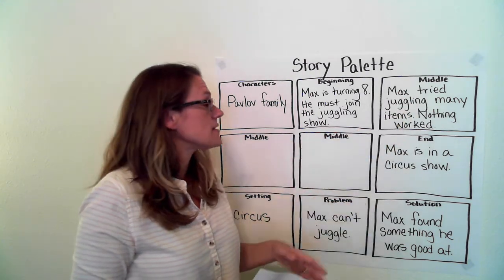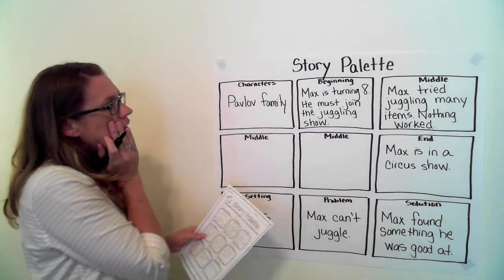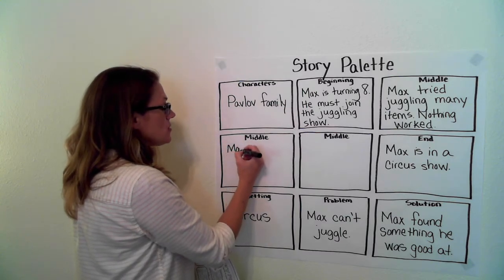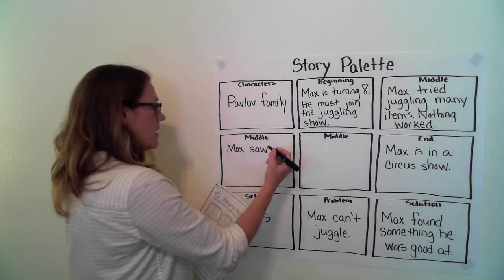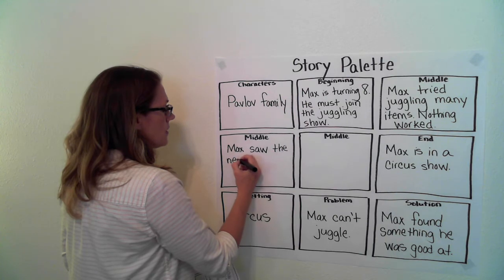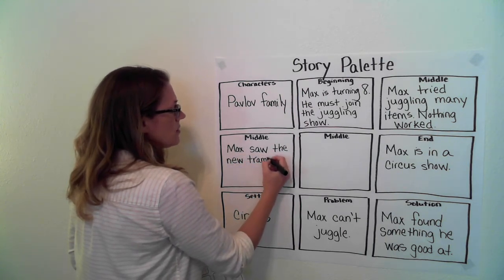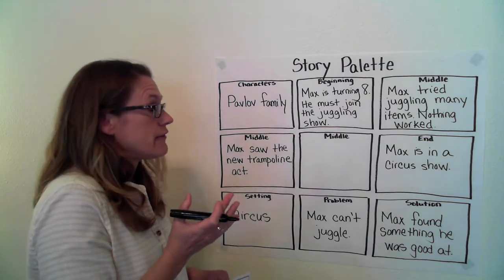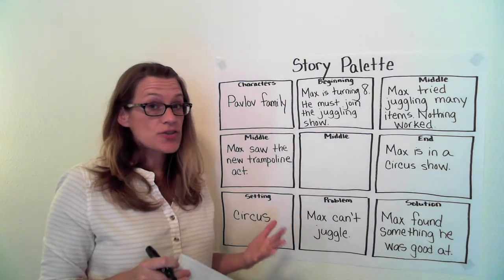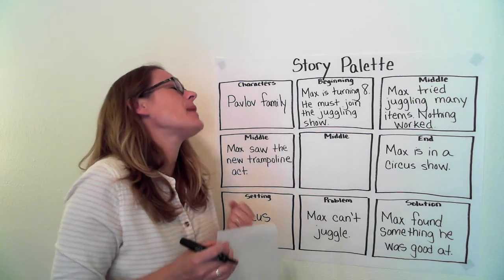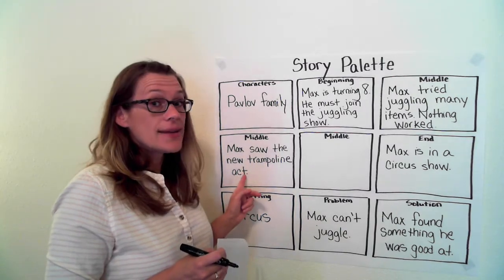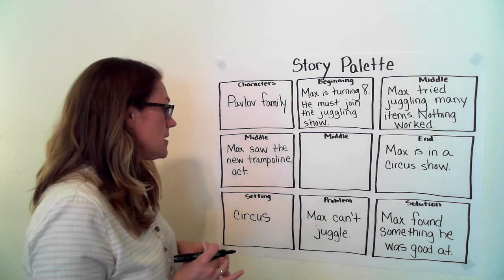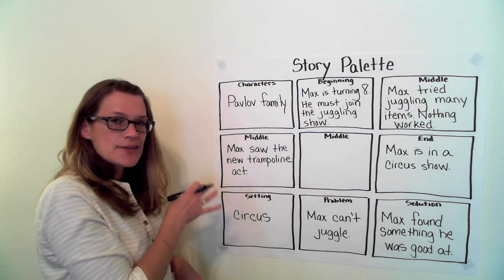By the end of the story we're going to have a solution to that problem. After that I thought — a new family is going to join the circus. I'm going to write in this section that Max saw the new trampoline act. He's from this juggling family, he has to join the circus because he's turning eight, but he can't juggle no matter how hard he tries. Then a new family comes with an act on the trampoline, and he's really interested in this.